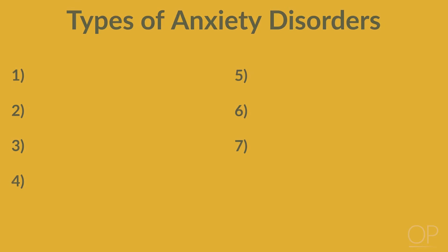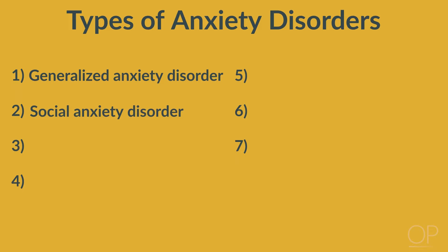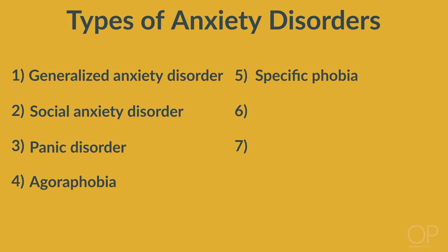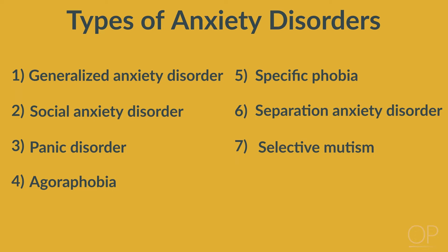Per the DSM-5, there are seven types of anxiety disorders that can occur in children, including generalized anxiety disorder, social anxiety disorder, panic disorder, agoraphobia, specific phobia, separation anxiety disorder, and selective mutism. It is beyond the scope of this video to discuss the nuances of diagnosing each of these disorders.